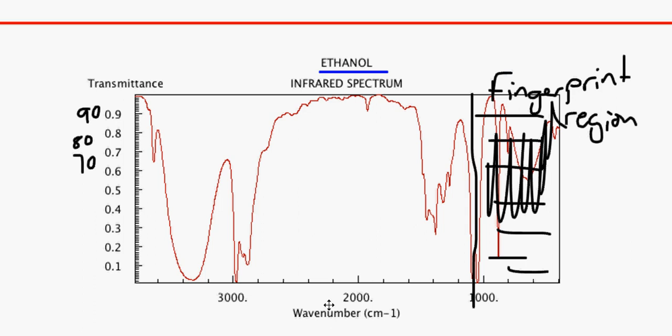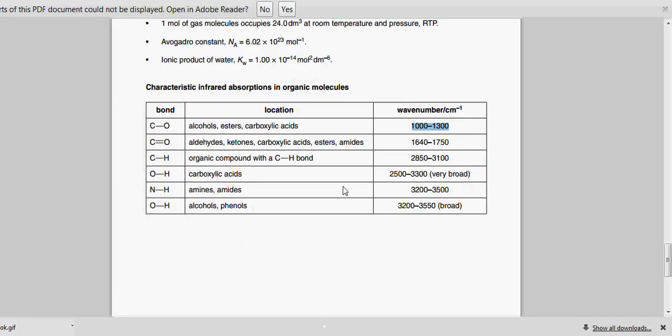We're going to have a look at ethanol. We know that ethanol, one of the functional groups in there, is a hydroxyl group. Remember, hydroxyl groups are the OH groups, not called alcohol groups. The hydroxyl groups are from 2500 to 3300 and it's very broad.